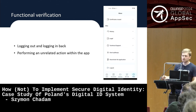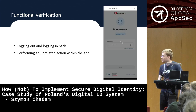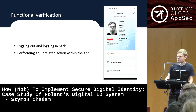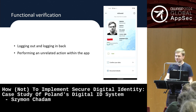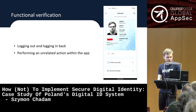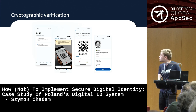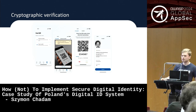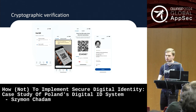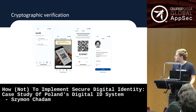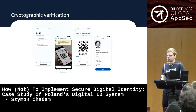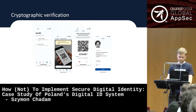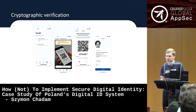Then we have the functional verification, which makes you perform some unrelated action within the application — like closing and reopening it or opening a different module. This level of security is basically protecting against screen recording or GIFs. And then there's the cryptographic verification, which involves two separate phones: a QR code is shown and scanned by the other phone, and there's a cryptographic protocol happening in between — similar to the COVID vaccine certificate approach used within the European Union.